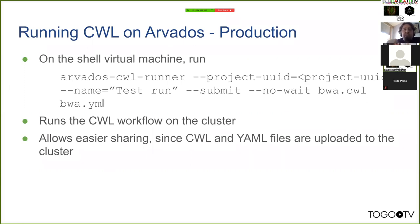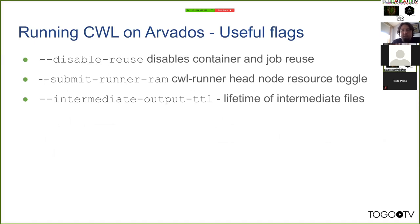If you say 'submit and wait', it spins the workflow off onto the cluster and then the command-line tool exits with the identifier of the submitted workflow — so you can walk away and it runs on the cluster without your shell node being involved. Some useful flags: you can disable reuse if you need to rerun things, adjust resources, and set a time-to-live on intermediate outputs so they self-destruct in (for example) 24 hours, cleaning themselves up automatically.